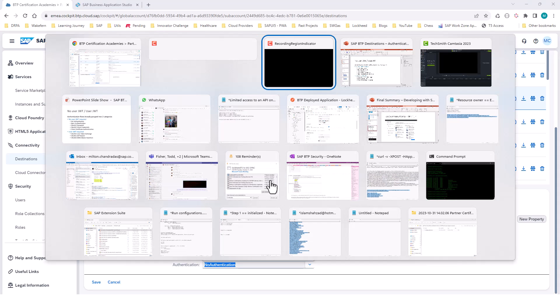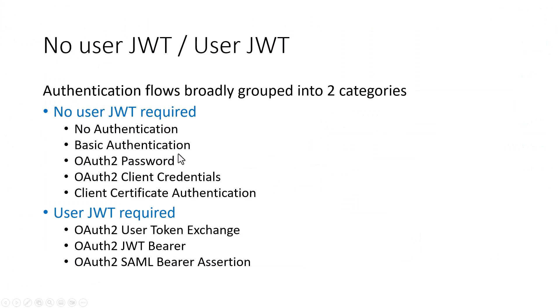Based on whether the authentication flow requires a user JWT, we can broadly classify the authentication flows into two types of categories: one is where the user JWT is not required, and one where the user JWT is required.